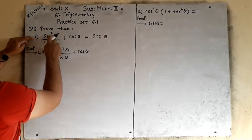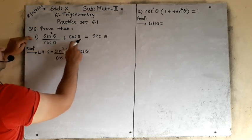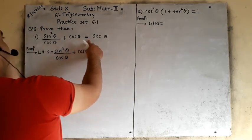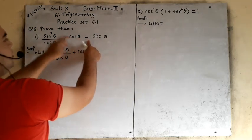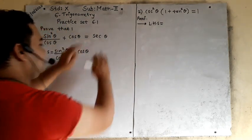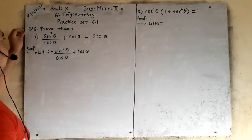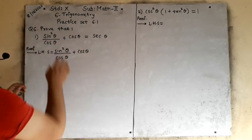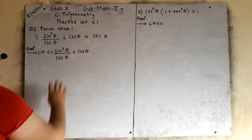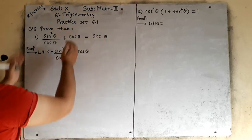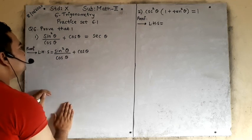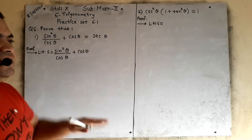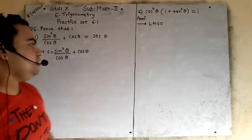See number 1: sin square theta upon cos theta plus cos theta is equal to sec theta. In 'proof that' questions, we always utilize the left hand side ratios and solve them so that they become equal to the right hand side. It means we will solve this left hand side and the answer should equal the right hand side.